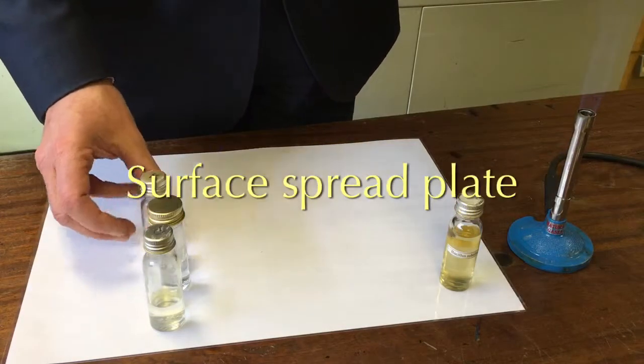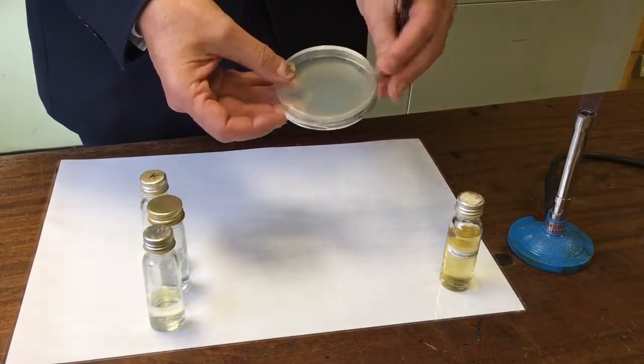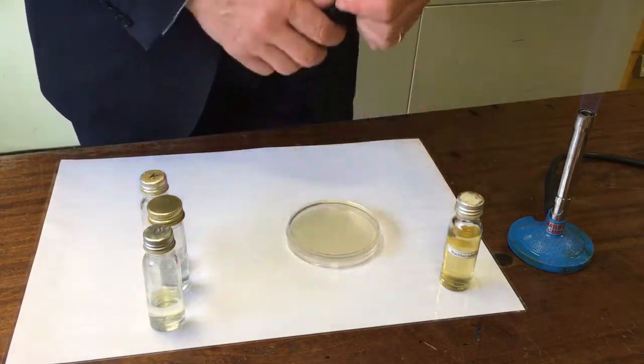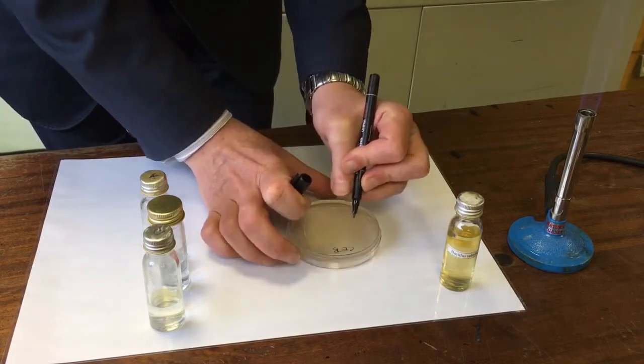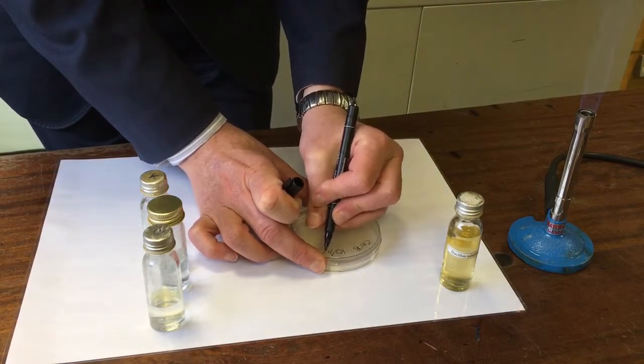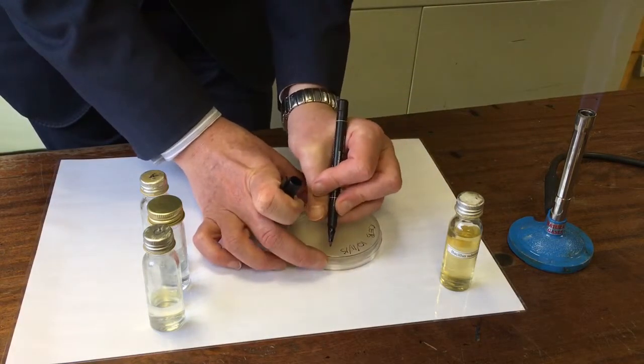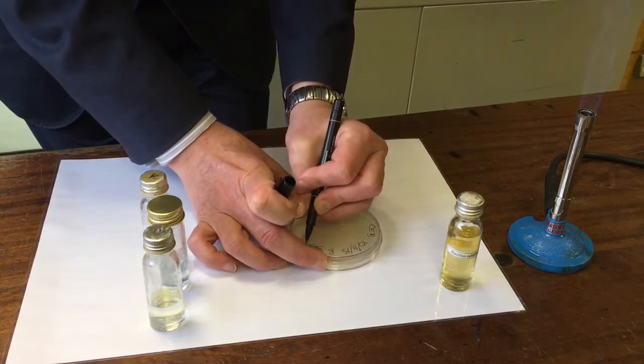I now want to perform what's called a surface spread. And there you've got a plate before use. It needs to be marked up. So I'm going to write on the bottom. My name. Today's date. And then the culture which is Bacillus subtilis.